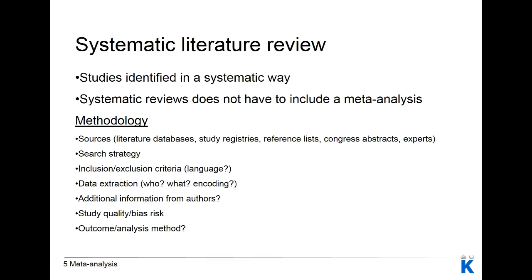When performing a systematic review, you first have to define what sources you are going to use to find the literature. It could be literature databases such as PubMed or Embase, different study registries such as clinicaltrials.gov. You can look into reference lists in review articles or original articles, read congress abstracts, and contact experts in the field to obtain additional data.